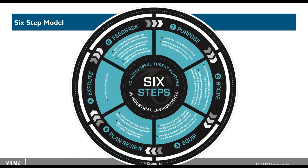There's a section in this paper called 'Threat Hunt Model Applied' — really a walkthrough of a case study showing where these six steps exist notionally. Dan or Mark, are either of you comfortable taking maybe a minute on each section and summarizing what steps are happening in this notional use case at each of the six steps? I think that'll help the audience understand how this is applied.